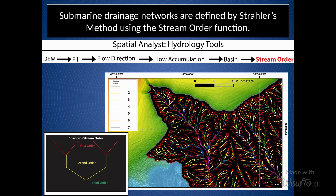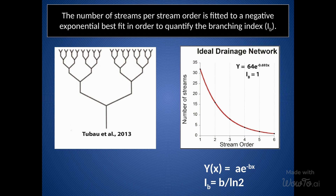Submarine drainage networks are defined by Strahler's method using the stream order function. This method assigns a stream order to each segment of the drainage network, with higher order streams having more tributaries. Streams are assigned an order based on their position in the network, with the smallest tributaries assigned a lower order and the main stem assigned the highest order. The method starts by assigning a stream order of 1 to all individual channels with no tributaries, then steps up: a stream with one or more tributaries of order 1 is assigned order 2, a stream with one or more tributaries of order 2 is assigned order 3, and so on. The number of streams per stream order is fitted to a negative exponential best fit in order to quantify the branching index (IB), which helps to understand the hierarchical structure of the drainage network.